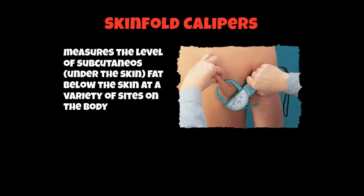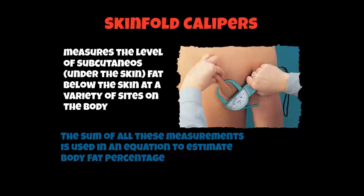The next method is skin fold calipers. Skin fold calipers are measured at various points on the body to measure the level of subcutaneous fat below the skin at a variety of sites. These sites consist of four or six different parts of the body, and the sum of all these measurements is used in an equation to estimate body fat percentage. In lessons we'll get a chance to try skin fold calipers, perhaps on your triceps and biceps.